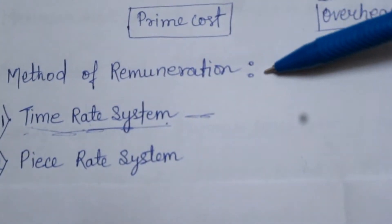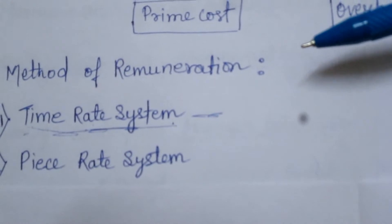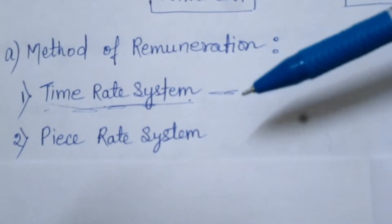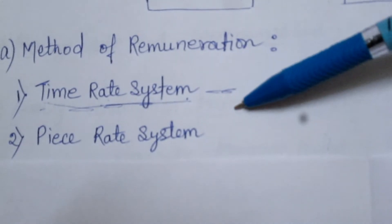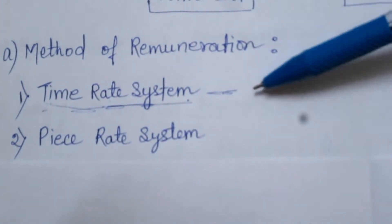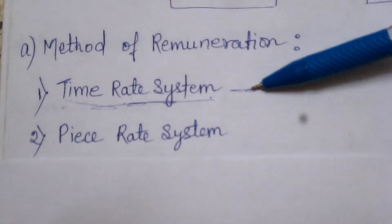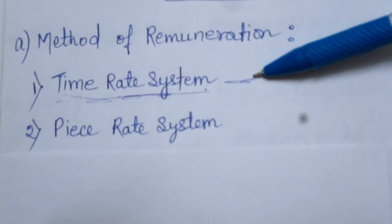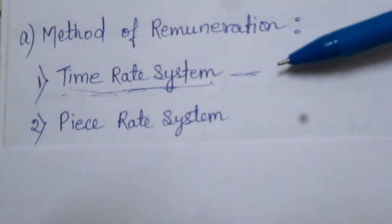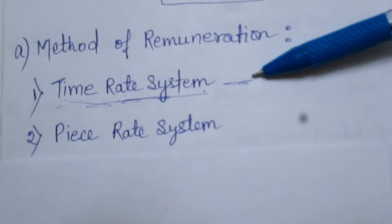Second है हमारा Method of Remuneration. कोई भी Company जब अपने Workers को Payment करती है, नॉर्मल सिचुएशन में, तो वो दो टाइप से करती है. पहला Method है Time Rate System — Company जो पैसा देती है वो टाइम के हिसाब से देती है. Output किसी Worker का कम या ज्यादा हो सकता है, उससे हम Measure नहीं करेंगे. जैसे एक clerk — वो सुबह आता है, शाम को जाता है, उसका एक Time Fix है, उस Time के हिसाब से उसको Payment मिलती है. इसे हम Time Rate System कहते हैं.